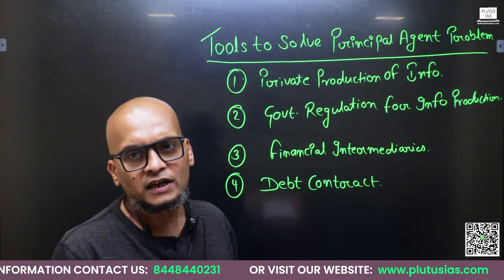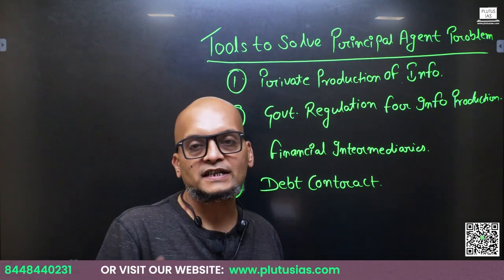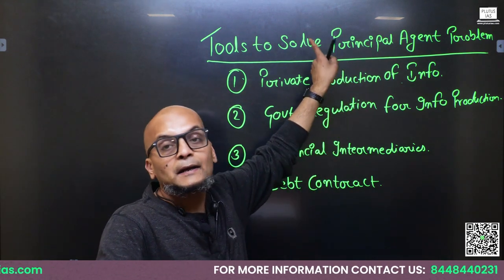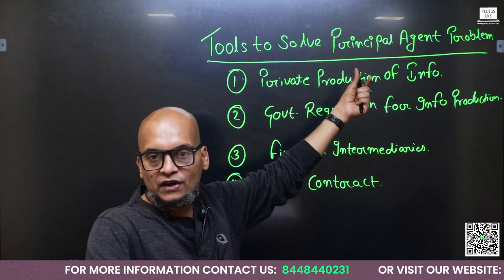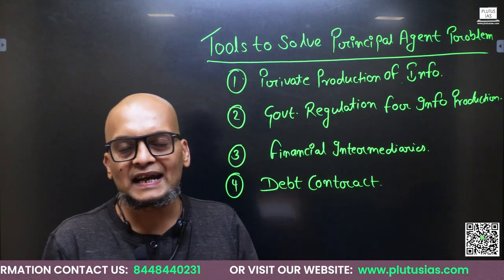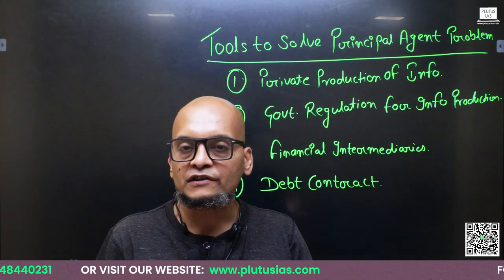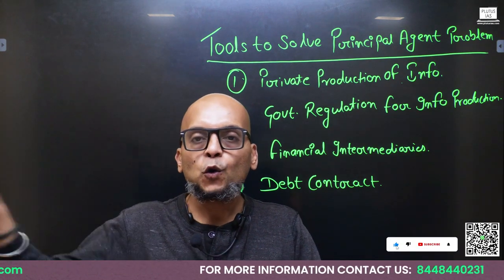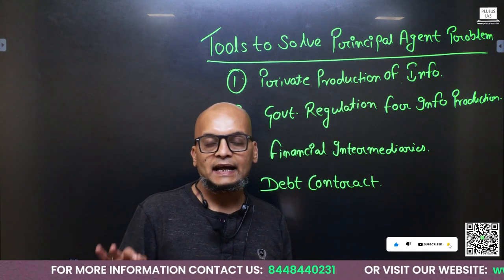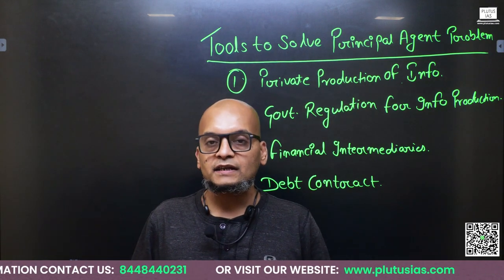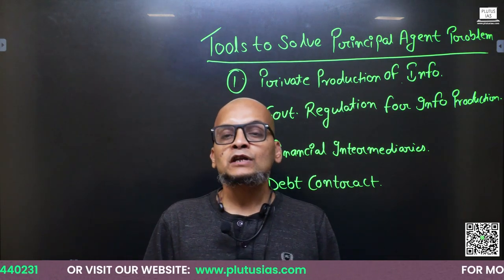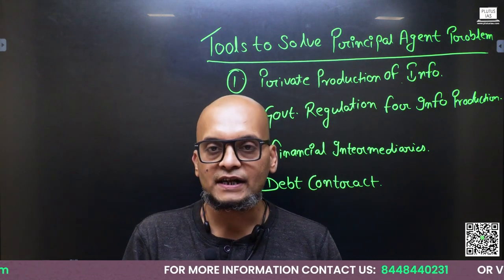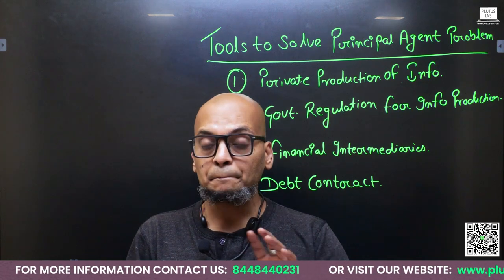To brief it out for people who are new and just watching this video — the principal refers to the owner of a company. I'm explaining in very layman language. The principal can also refer to the investor or shareholder, but for the time being, let's say that the principal is the owner of the company and the agent is the director or manager of that company. The principal has hired the agent — the employer is the principal and the employee is the agent.